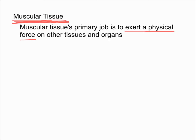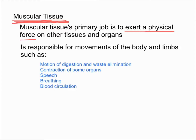Muscular tissue has elongated cells that are specialized to contract when they are stimulated. Muscular tissue is also responsible for movements of the body and limbs. For example, some of those movements are motion of digestion and waste elimination, contraction of some organs, speech, breathing, and allows for blood to be circulated.